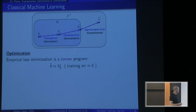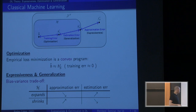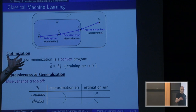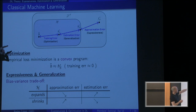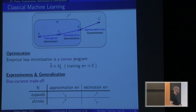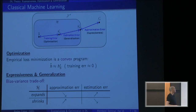In terms of expressiveness and generalization, we have the well-known bias-variance trade-off. If I expand my hypothesis space and make it larger, the approximation error obviously reduces, but the estimation error increases — we will need more training samples. If the hypothesis space is smaller, approximation error increases and estimation error decreases. Up until about five years ago, we felt we had a pretty good understanding of what's going on.